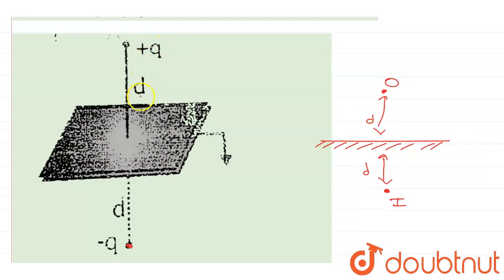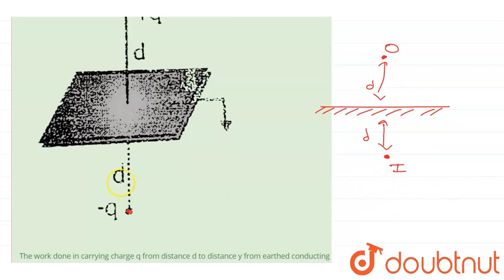So if I have a charge plus q at a distance d from a conducting plane, I can consider its virtual image minus q charge at a distance d from the same conducting plane. Now